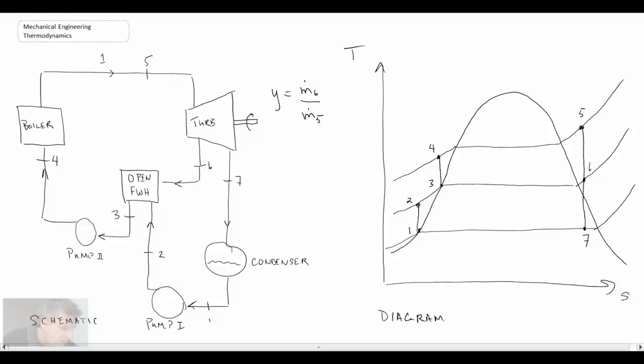And consequently what we will be able to do, we'll be able to say that this fluid stream here at 6 is percentage mass fraction y and the fluid normally leaving our turbine will be mass fraction 1 minus y. And so we can carry that through.